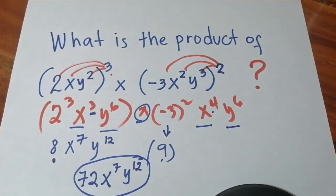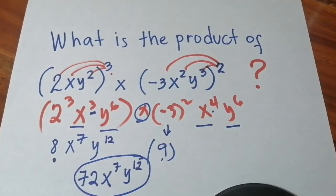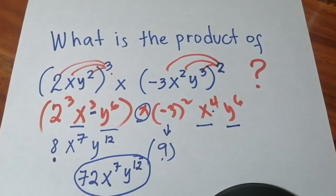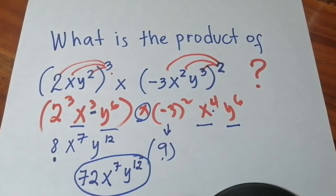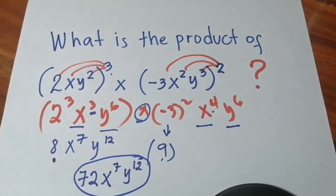So that's how we solve this equation, finding the product of 2xy squared cubed times negative 3x squared y cubed raised to the second power. I hope you learned something again today.